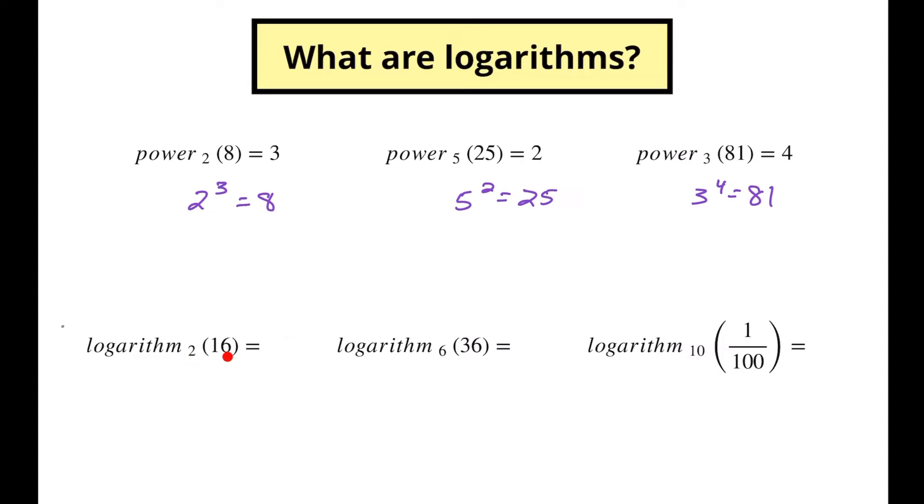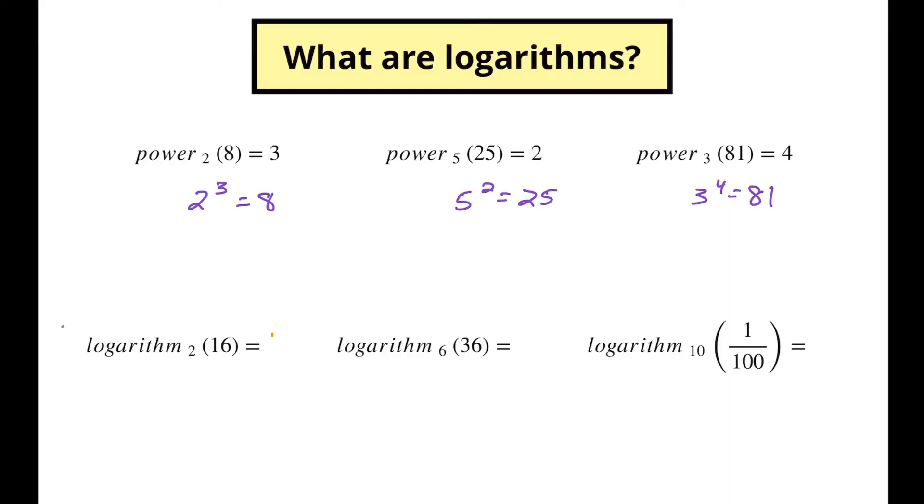Then okay, so 2 to the what's that? 2 to 2 is 4, times 2 is 8, times 2 is 16. So 2 to the fourth power is going to be 16. Or here, if I'm again following the same pattern that we have up above, logarithm_6 of 36. So 6 to what power is going to give me 36, and that's going to be 2.